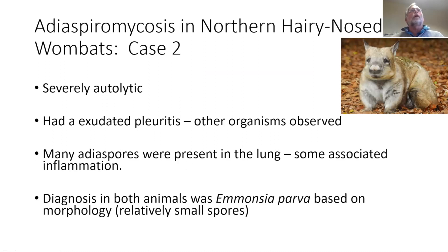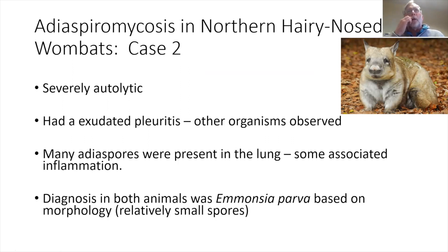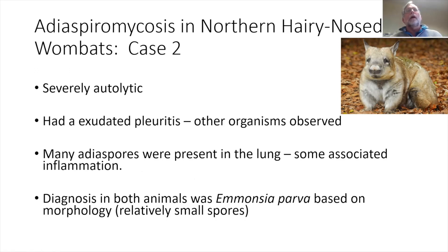The second animal, from the adjacent territory, was already fairly severely autolytic when found dead. It had an exudative pleuritis with a lot of exudative fluid in the thoracic cavity — a lesion not seen in any other animal with this or similar organisms. Other organisms, probably bacteria, were present in that fluid and may have been the primary cause. There were many adiospores in the lung, and in both of these animals, as well as animals from Tasmania and the southern hairy-nose wombat, the organism was believed based on morphology to be Emmonsia parva.